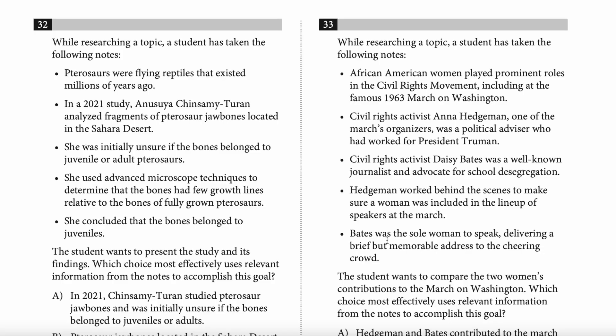Just read the question carefully, and then pick the answer choice that most directly addresses the question. Here's the hack — listen carefully: you don't need to read the notes at all. All you need to do is read the question, really just the first sentence of the question. The right answer is going to directly address the question, and none of the wrong answers will address it. Just read the question, understand the question, and pick the answer that addresses it without reading the notes.